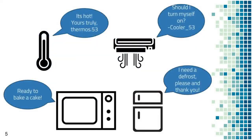Let's look at a simple example. Say you have a smart microwave which can tell you when the oven is hot enough to bake your cake, and you have a thermostat which tells you the temperature and allows you to control it. Going back to the definition, you need to be able to address it uniquely, such that you know it is the thermostat from room number 53, for example.